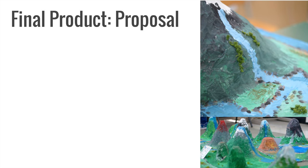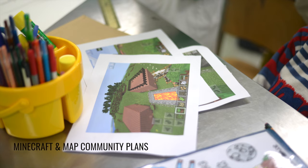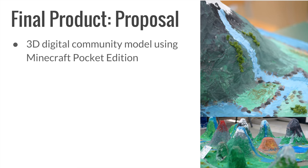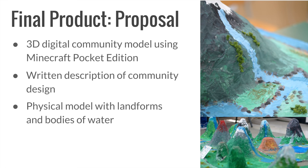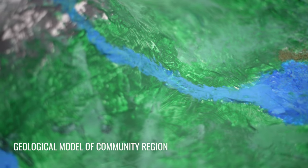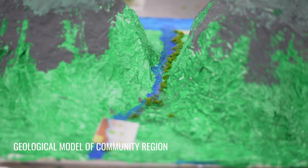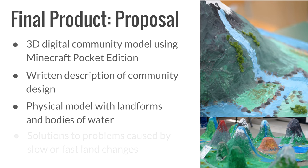The community planners created a proposal that included the following: a 3D model of the community using Minecraft Pocket Edition; a description of the community design that gives supportive reasons, facts, definitions, and a conclusion; a physical model that shows the different landforms and bodies of water in the region where the community would be established; and finally, design solutions that solve or reduce the impact of geological problems caused by slow or fast land changes.